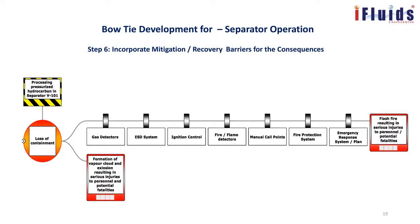All these mitigation barriers are captured on the right-hand side of the bowtie. After the top event has happened, they show how we mitigate the event turning into a consequence — either to avoid or reduce the impact. The same set of mitigation barriers applies to the vapor cloud explosion consequence, as it is also fire, just at a higher scale.